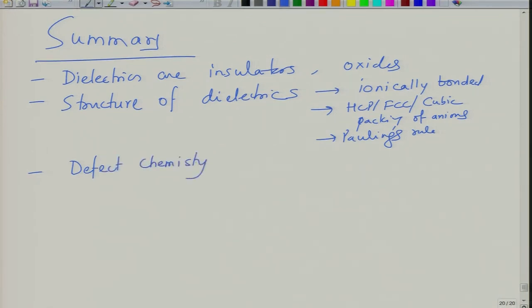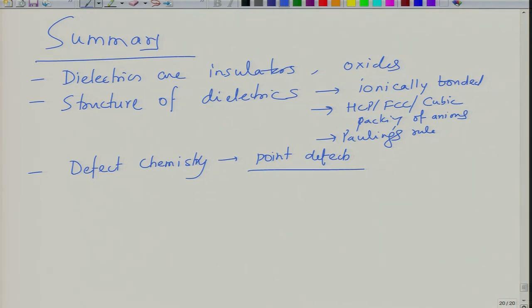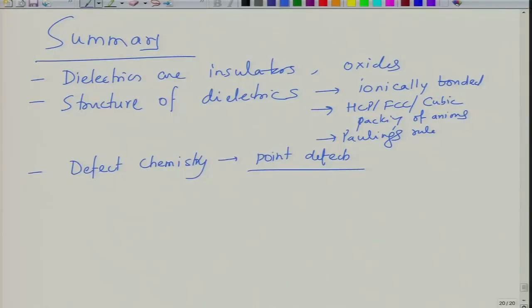Defect chemistry is extremely important from the perspective of point defects. Point defects include vacancies of oxygen, vacancies of metal, metal interstitials, and oxygen interstitials. They give rise to extra electrons or holes in the system and depend on temperature, partial pressure of oxygen, and impurity concentration. If you have many defects, the material may become conducting and not useful as a dielectric. But by using appropriate temperature, partial pressure of oxygen conditions, or dopants to reduce defects, one can use defect chemistry knowledge to tailor materials.